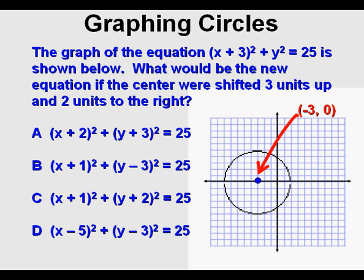The first thing it would help to know is the center of the circle we're looking at. First, we mark the center of the circle at negative 3 comma 0. Then we can move that point 3 units up and 2 units to the right as we read in the text of the problem.